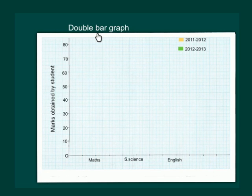A double bar graph is used to compare two sets of data simultaneously. Let us take an example.